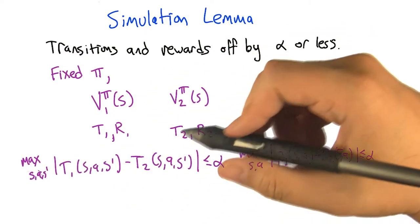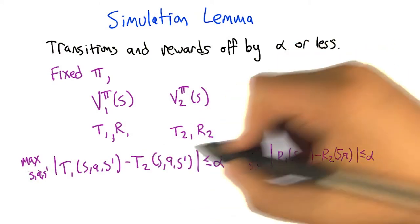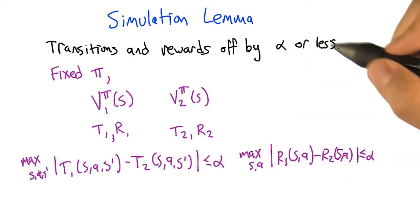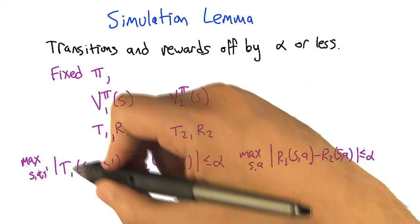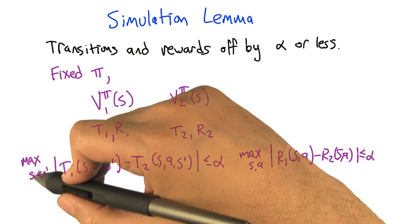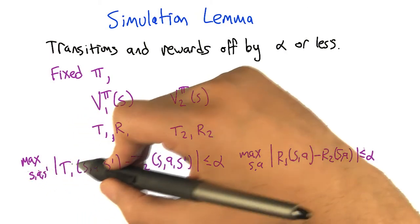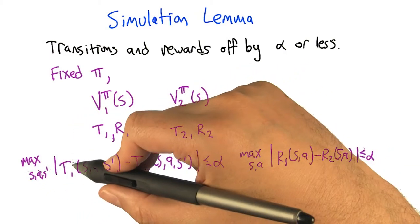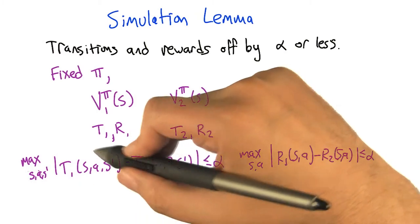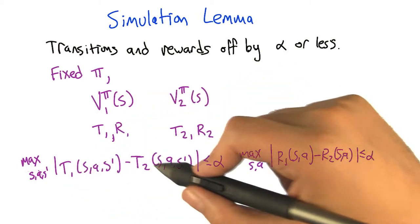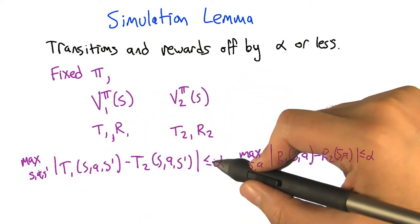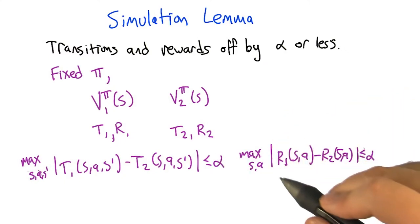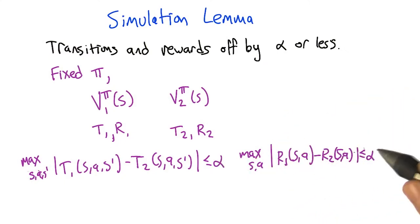Just to be concrete, this is what I mean by the transition functions and reward functions not being too different: we have this value alpha. If we take the maximum over all state, action, next-state triples, the probability assigned by T1 and the probability assigned by T2 are not different by more than alpha — and the same thing with the rewards.